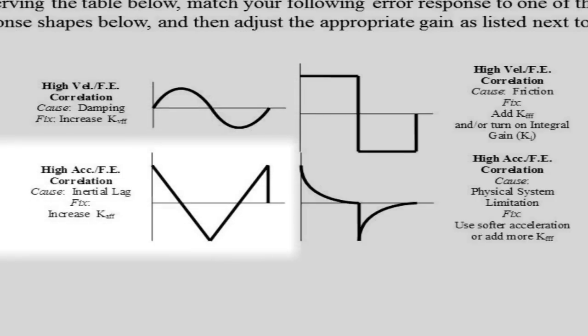The bottom left diagram shows a high correlation between the following error and the commanded acceleration. They have the same shape. This is due to inertial lag. To compensate for this, increase kAFF.